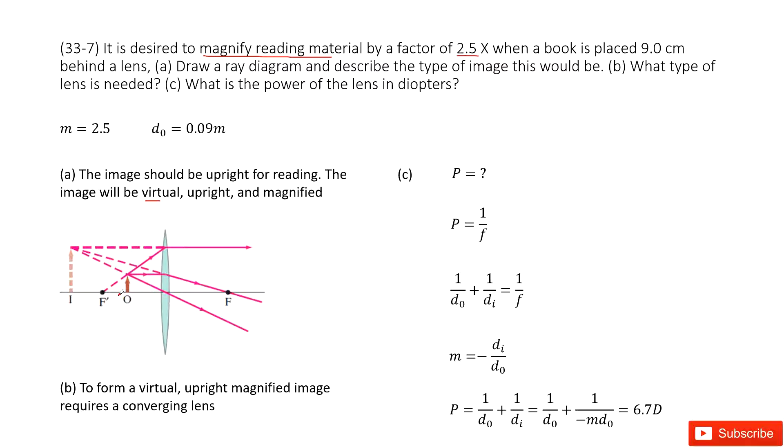The second one, what type of lens should it be? So to form a virtual upright magnified image, this needs to be a converging lens.